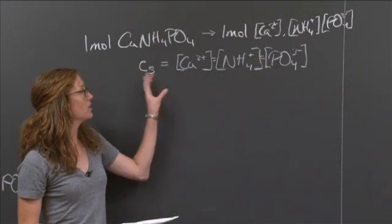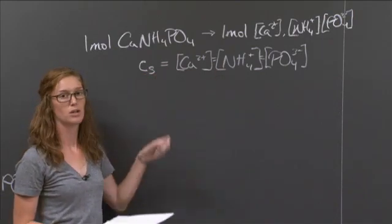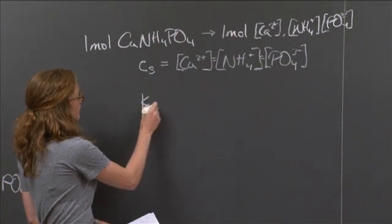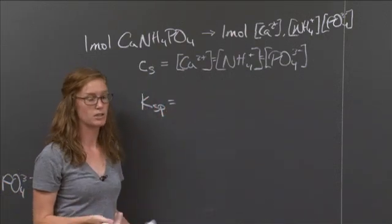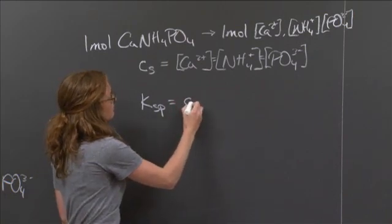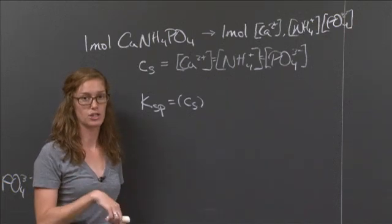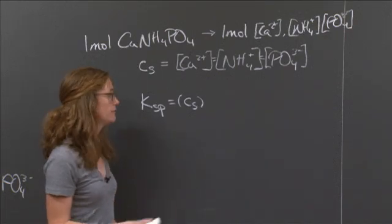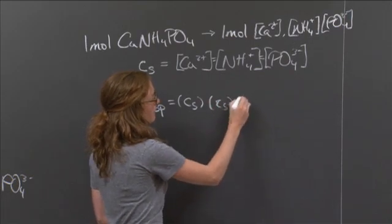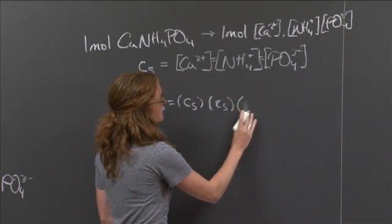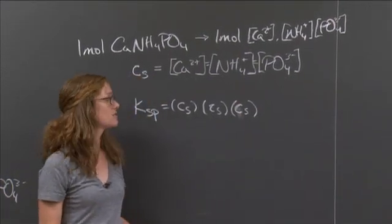Now we can plug the Cs into our Ksp equation that we had before. So instead of the concentration of calcium ions, we have it's equal to the concentration of the compound dissolved. The same goes for the ammonium and the phosphate, because again, we have 1 to 1 to 1 to 1 stoichiometric coefficients.